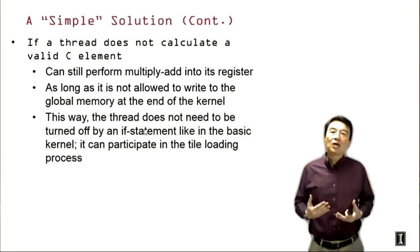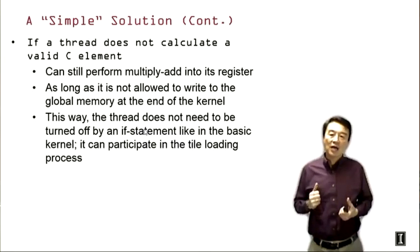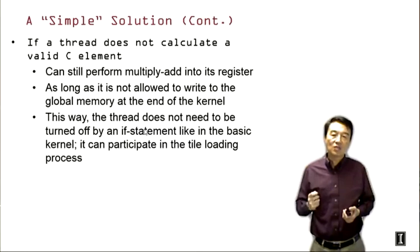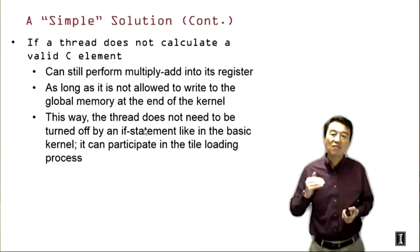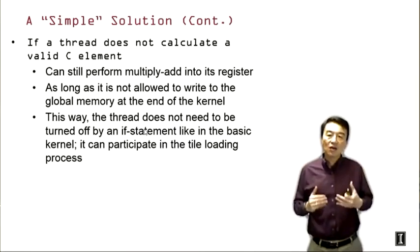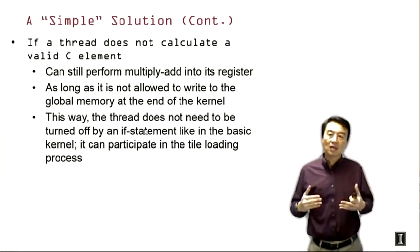In order to avoid writing into an incorrect C element position or even triggering a memory protection error, at the end of the calculation we will need to prevent some of the threads from writing into C. However, as long as we have zeros or appropriate values in the tiles, we can allow all these threads to perform the calculation and accumulate into their private C values. As long as we do not allow them to write into the final C array, we are okay. This way, we allow some of the threads that are not calculating valid C elements to still participate in the loading of tiles. This addresses the second major case analyzed in the previous lecture.